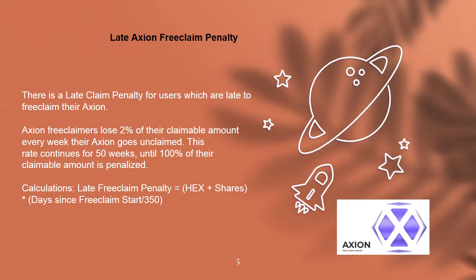Late Axion free claim penalty. There is a late claim penalty for users who are late to free claim their Axion. Free claimers lose 2% of their claimable amount every week their Axion goes unclaimed. This rate continues for 50 weeks, until 100% of their claimable amount is penalized. The calculation is: late free claim penalty equals HEX shares × days since free claim start ÷ 350.